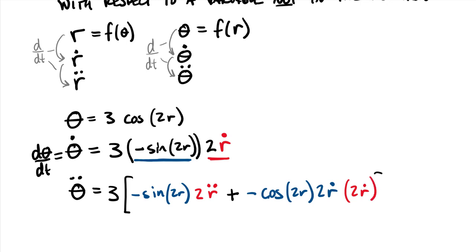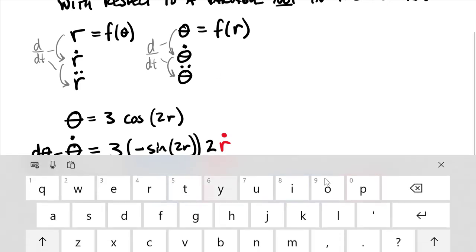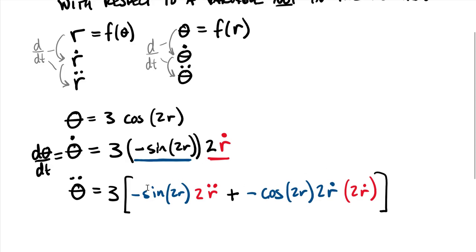That whole thing times three. Once again, this is the first term times the derivative of the second term, plus the derivative of the first term times the second term. The order of these doesn't technically matter since you're just adding them together. This gives you the overall value of θ double dot. Then we just plug in known values of r, r double dot, r dot, and we can find our overall numeric value of θ double dot.